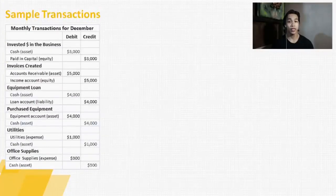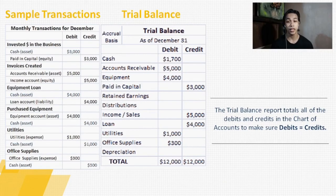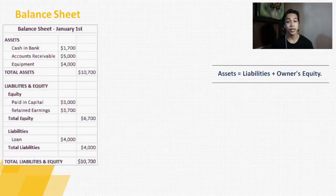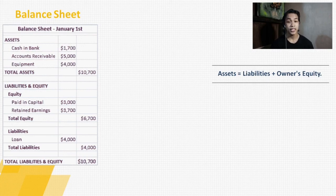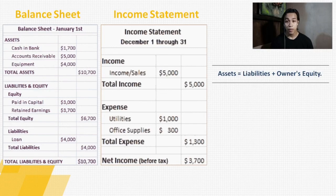Below is an example of sample transactions and a trial balance. In trial balance, you don't want to run your financial reports until you know for sure that your data is good. The trial balance report totals all the debits and credits in the chart of accounts to make sure debits equal credits. The accounts reported on the balance sheet are assets, liabilities, and equity, following the accounting equation: assets equal liabilities plus owner's equity. If a company's income exceeds its expenses, then the company has made a profit. If expenses exceed income, then the company has a loss. This is why the income statement is also called the profit and loss report.